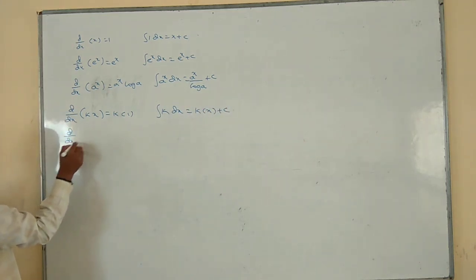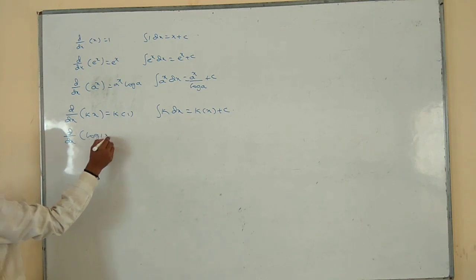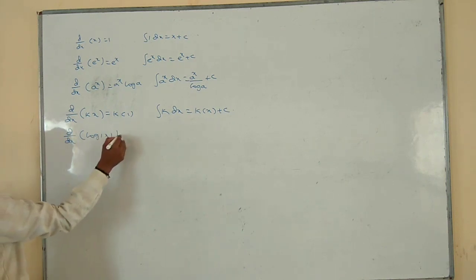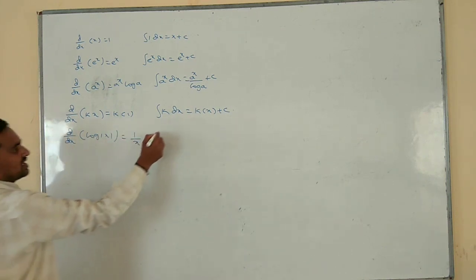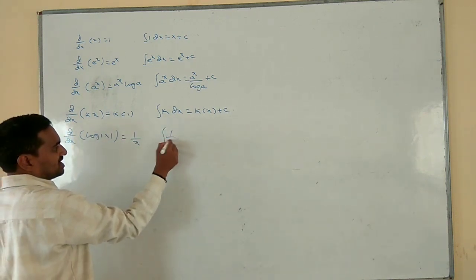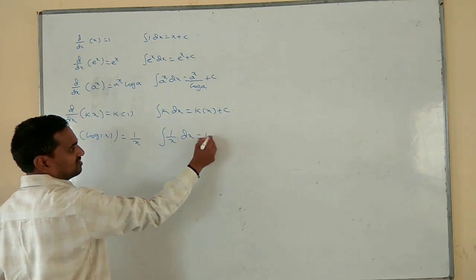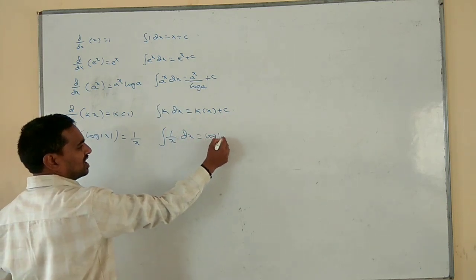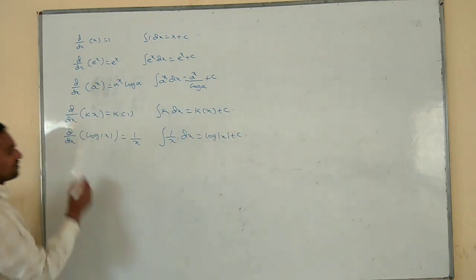dy/dx of log modulus of x is equal to 1 by x. Integration of 1 by x dx equal to log modulus of x plus c.